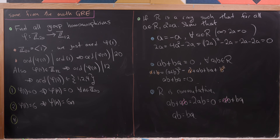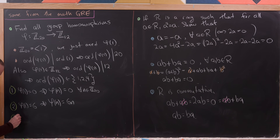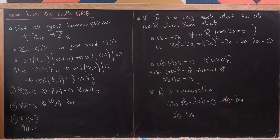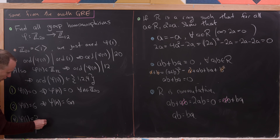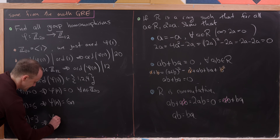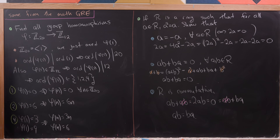For order 4: there are two elements of order 4 in Z₁₂, namely 3 and 9 (since 4·3 = 12 ≡ 0 and 4·9 = 36 ≡ 0). These give φ(n) = 3n or φ(n) = 9n respectively. So in total we have four homomorphisms.